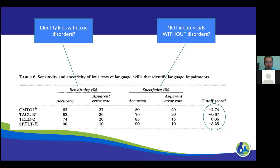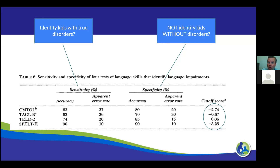Let me give a practical example. A long time ago we had triplets come into the clinic, and we did three separate evaluations without confirming which test we'd use. The other two SLPs gave the PLS; I gave the CELF Preschool. The other two SLPs found no disorder; I found a disorder. When we got together and talked, we realized they were all at the same language level, but the CELF Preschool scored lower in general than the PLS. We can see very different results across different tests.